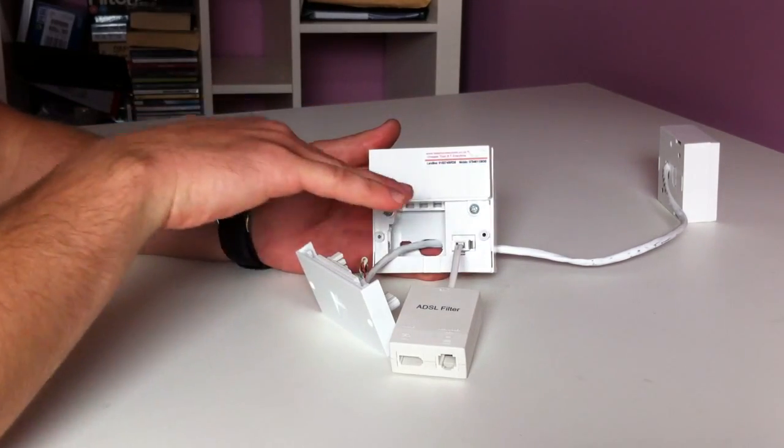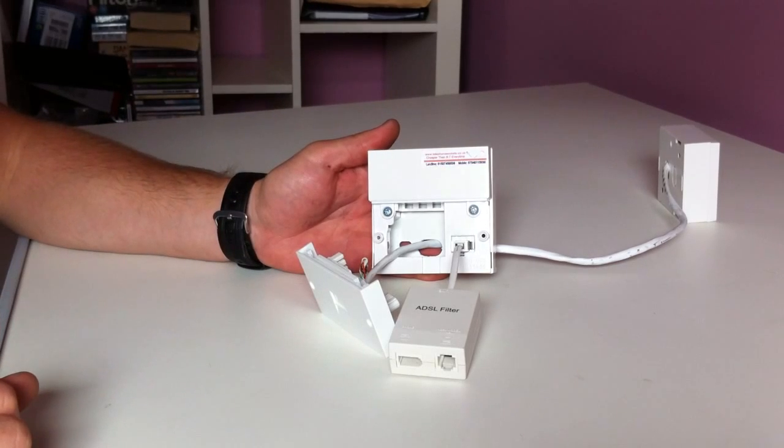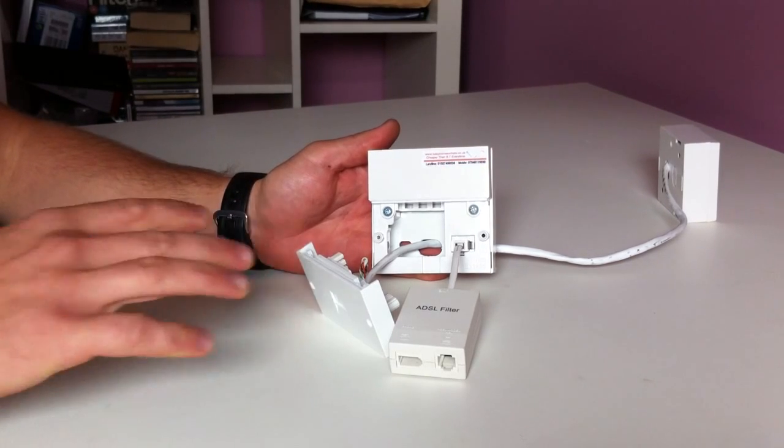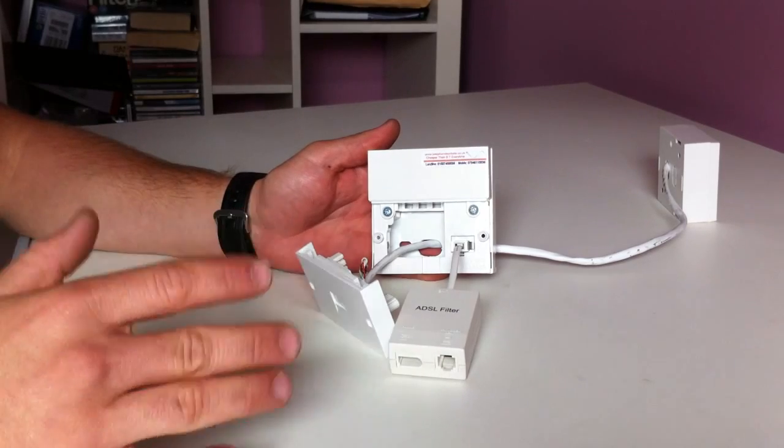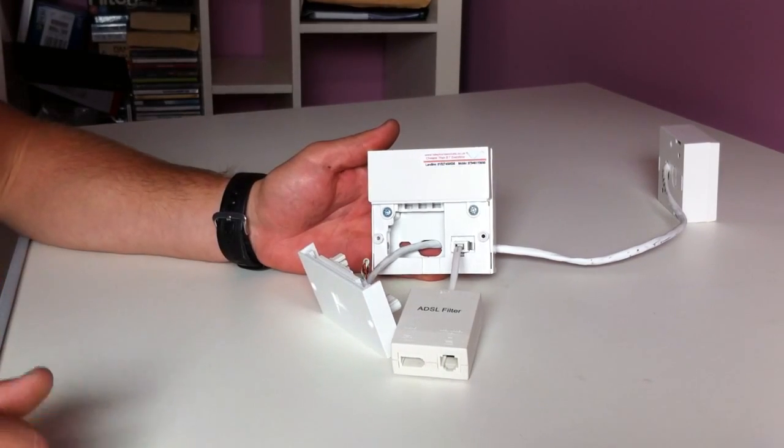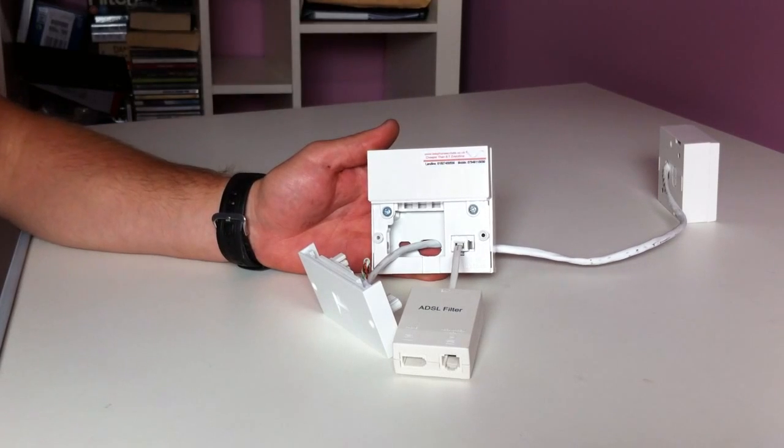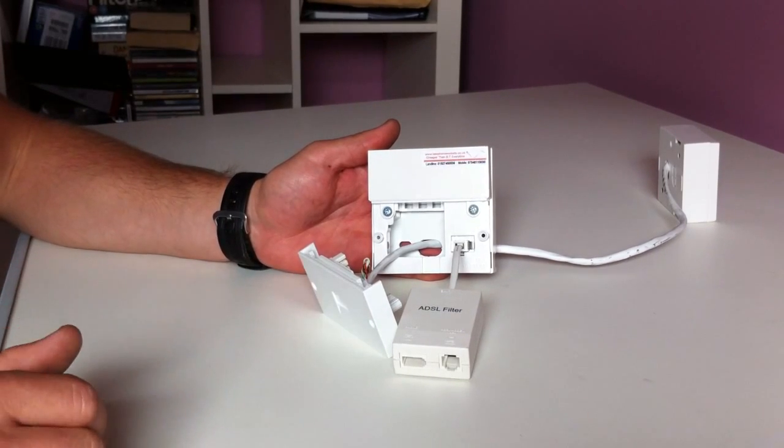If it is working to that point there, then you know the fault is on your internal wiring, on your internal telephone extensions. In which case, if your service provider come out, for example BT or the post office or whoever, and prove the fault is on that internal wiring, then they are going to charge you quite a considerable amount of money. It's an expensive visit charge and an expensive hourly rate.